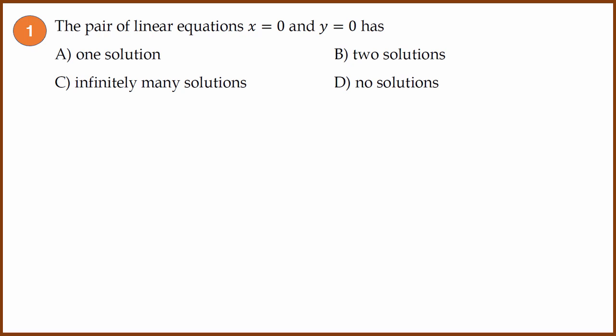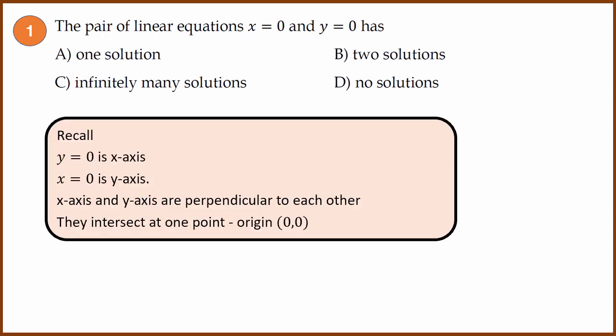First question: The pair of linear equations x equals 0, y equals 0 has how many solutions? Now x equals 0 is the y-axis, y equals 0 is the x-axis. So the x and y-axis are perpendicular to each other. They intersect at one point, the origin (0, 0). Therefore this problem has one solution.